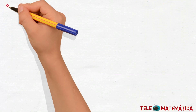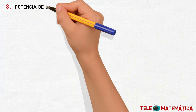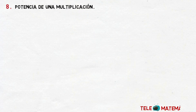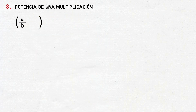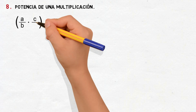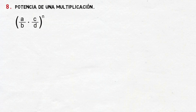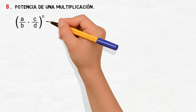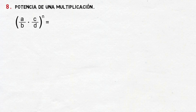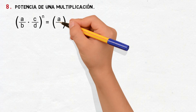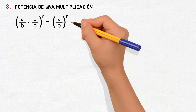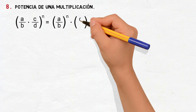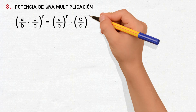Última propiedad: potencia de una multiplicación. Esta se define como A dividido para B multiplicado para C dividido para D, elevado a la N. Esto va a ser igual a elevar a la N la primera fracción, A dividido para B, multiplicado y elevar a la N la segunda fracción, C dividido para D.